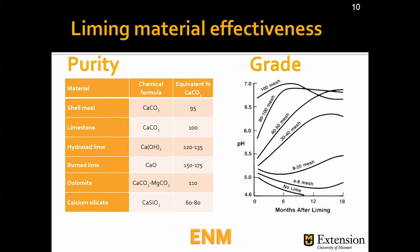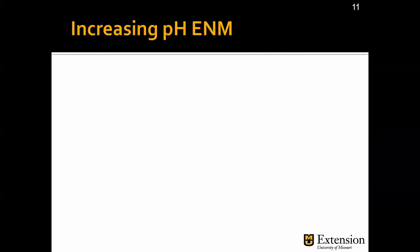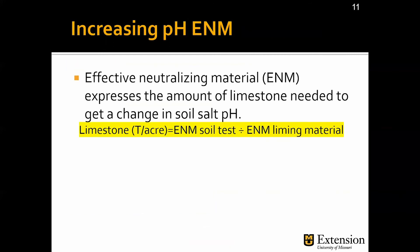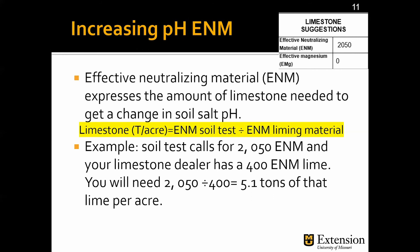How do we use ENM to determine how much liming material we need? The effective neutralizing material value expresses the amount of limestone needed to get a change in soil pH. You can calculate how many tons of that liming material you need per acre by dividing the ENM from the soil test by the ENM of the liming material. For example, if your soil test calls for 2050 ENM and your limestone dealer has a material rated at 400 ENM, you divide 2050 by 400 — you need 5.1 tons of that liming material per acre. And remember, the only way to know this is to get your soil tested.